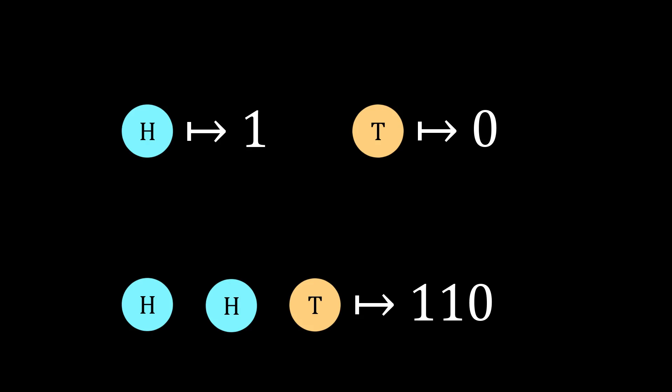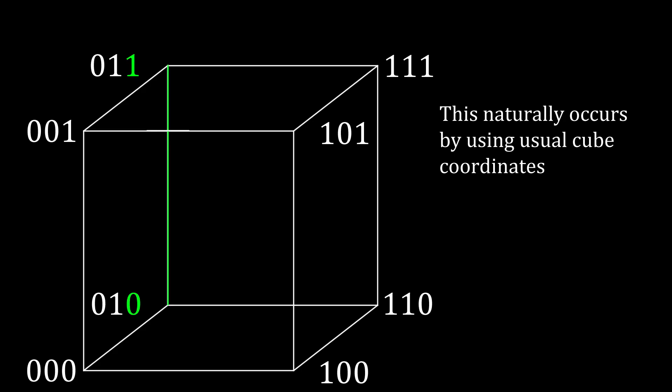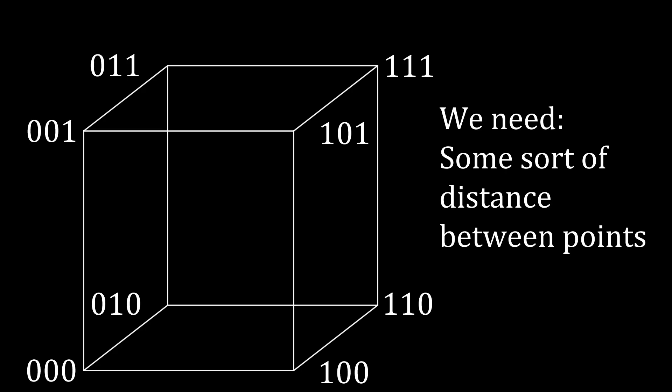First, we need a way to more efficiently represent the faces of each coin. Let us represent heads with the number 1 and tails with the number 0. For example, heads-heads-tails will be represented by the sequence 1, 1, 0. Now, take a look at this cube graph. We can associate each point on a cube graph with a sequence of 1s and 0s, meaning each point represents a possible combination of coins. Two points are connected by an edge if and only if their sequences differ on only one digit. For example, 010 and 011 are connected because they differ only on the third digit. We can also think about the distance between points.